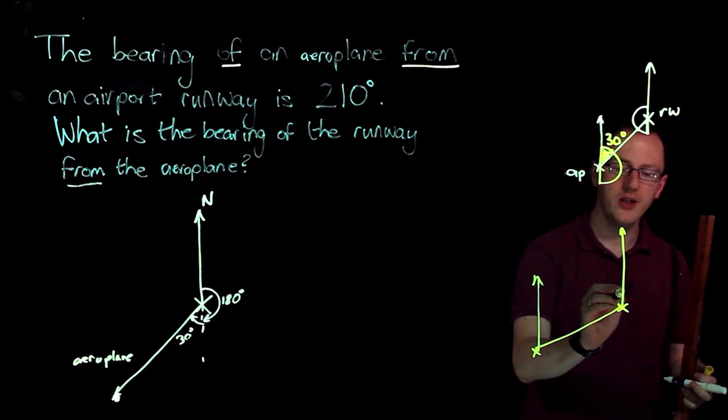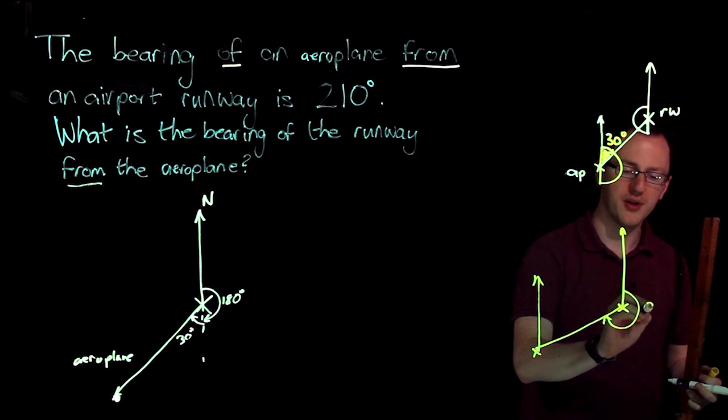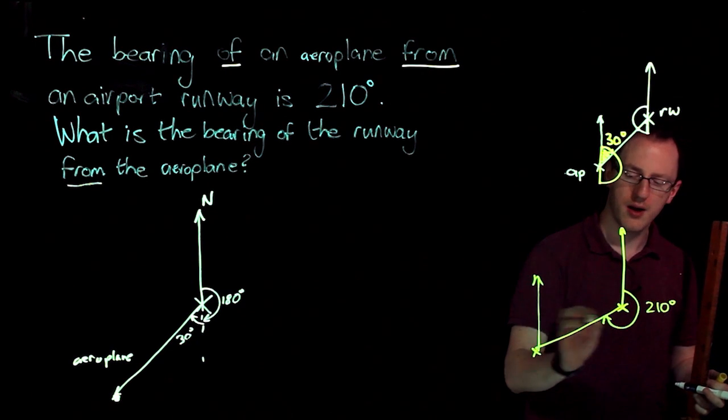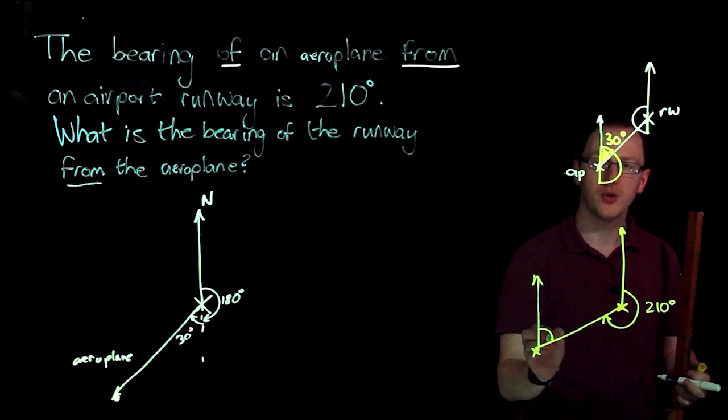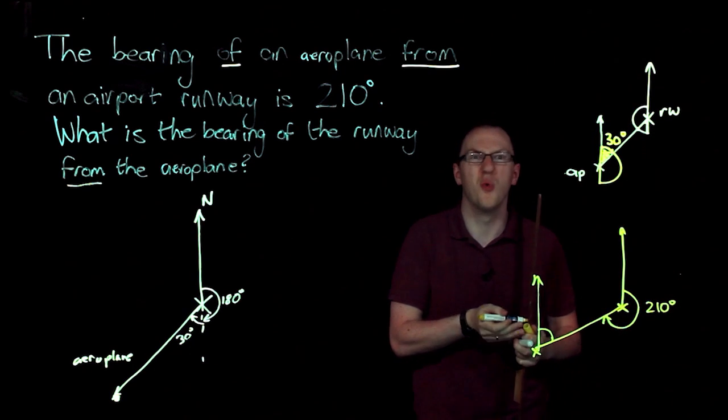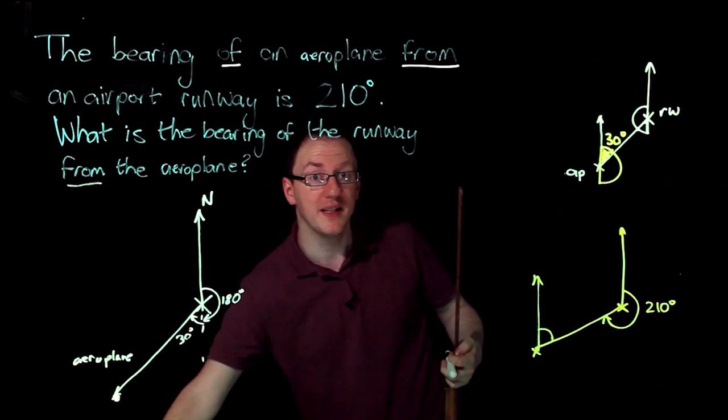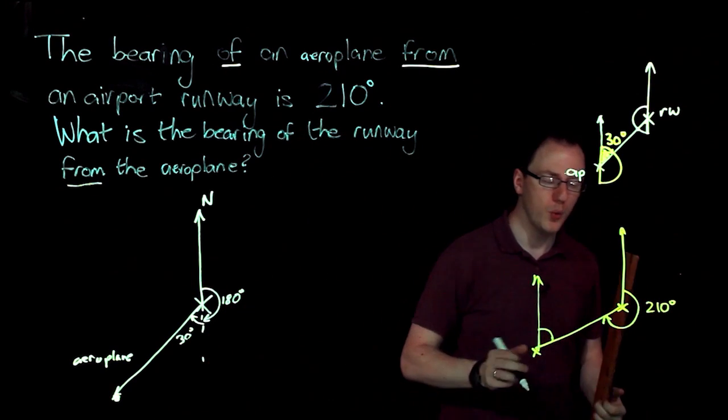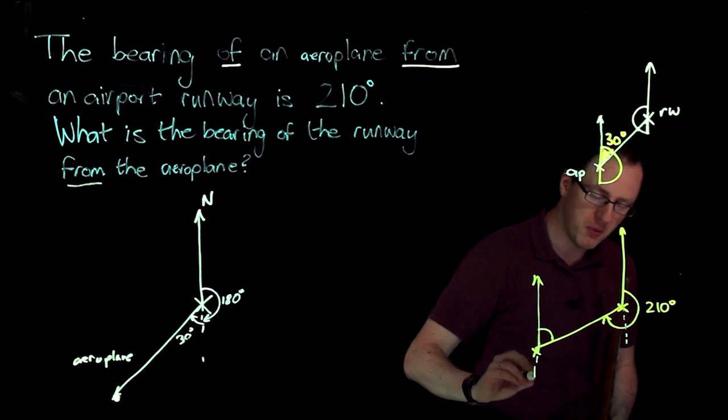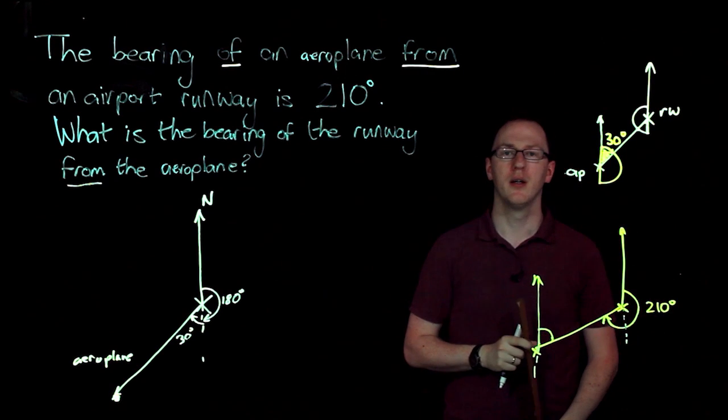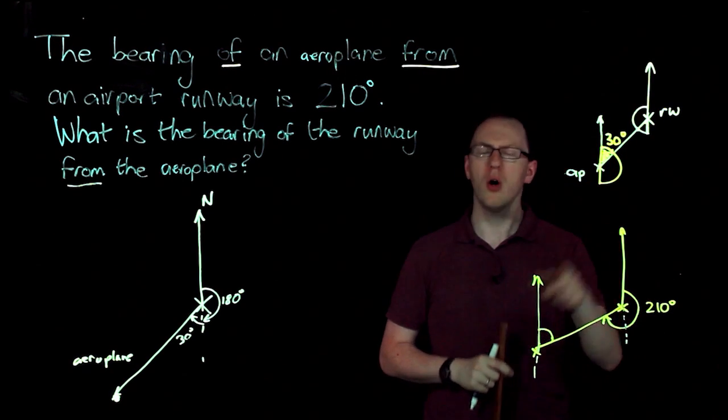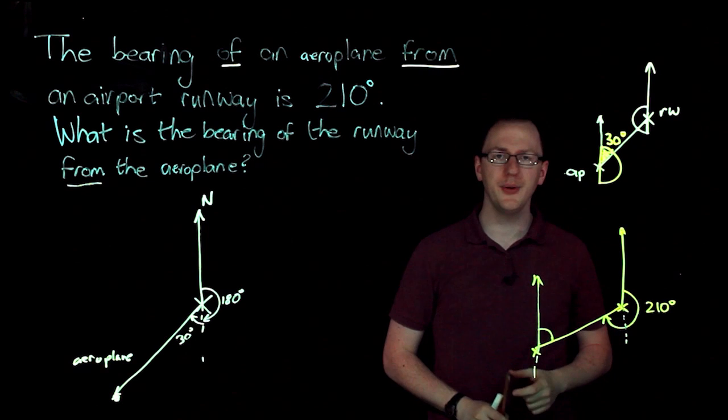And they're both marked north. We know that that is 210 degrees. And we're trying to work out that. Now we know what that is, we've measured it up here. But we're trying to see how we do it if we didn't know already. Well, north is marked in both of these diagrams. North and north are always going to be parallel to each other.